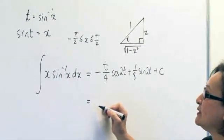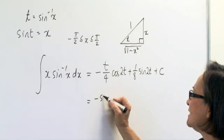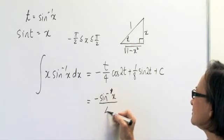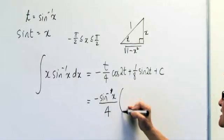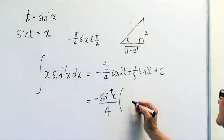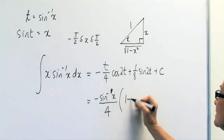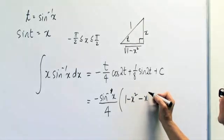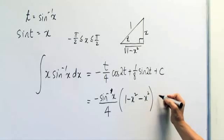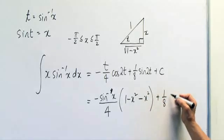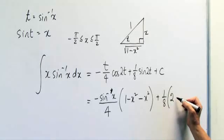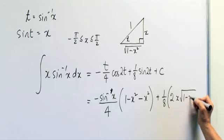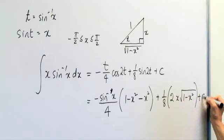t can now be replaced by sine to the minus 1 of x. Cos 2t is cos squared t minus sine squared t, so that's going to be 1 minus x squared on 1, take away x squared, plus 1 eighth. Sine 2t is 2 sine t, which is x, and cos t, which is the square root of 1 minus x squared plus the c.